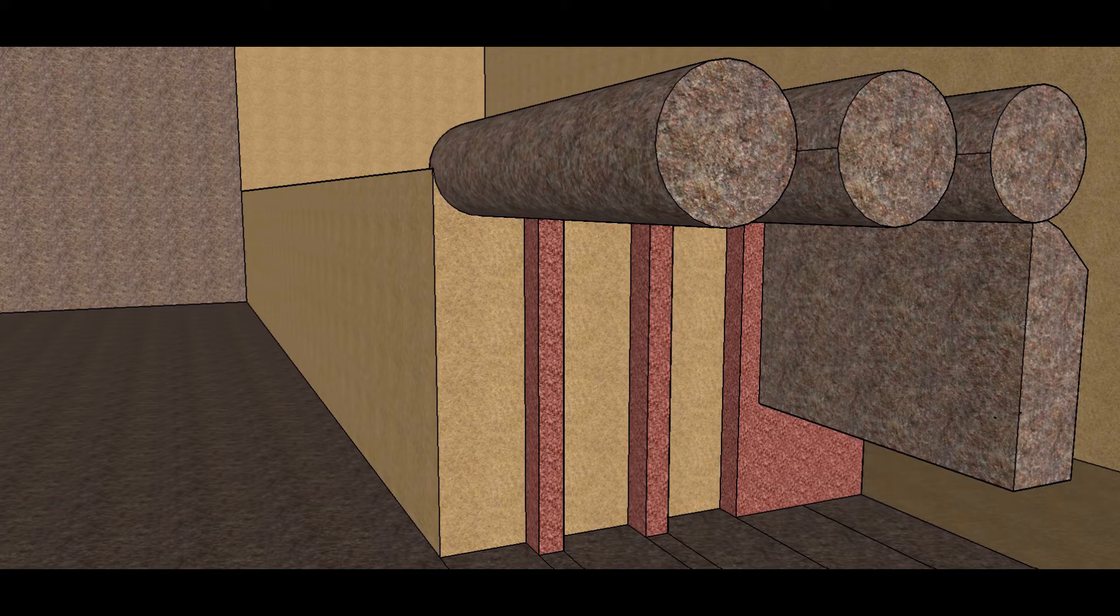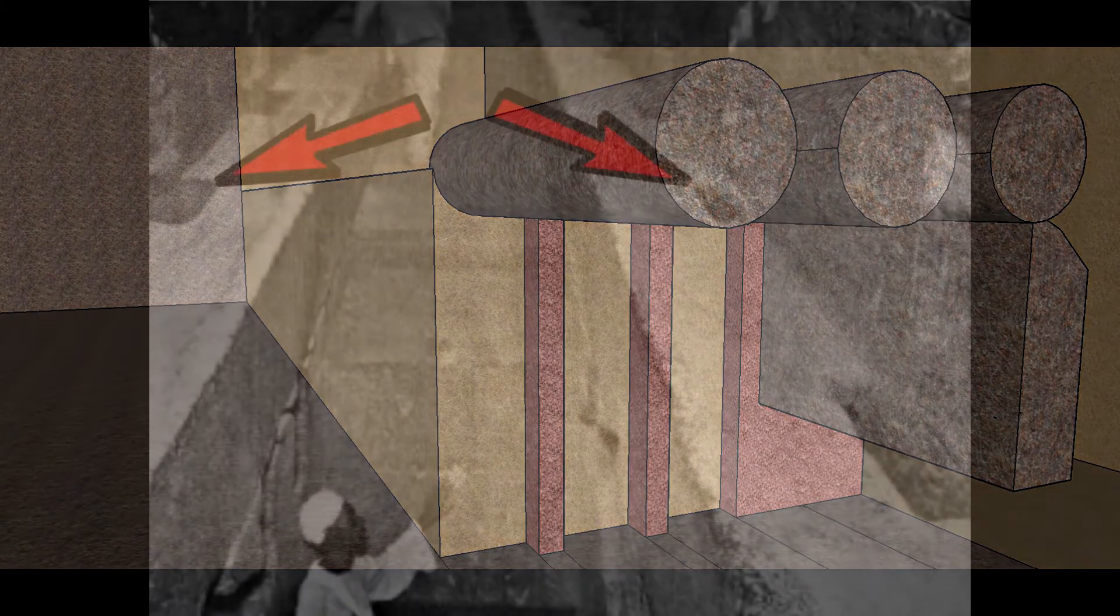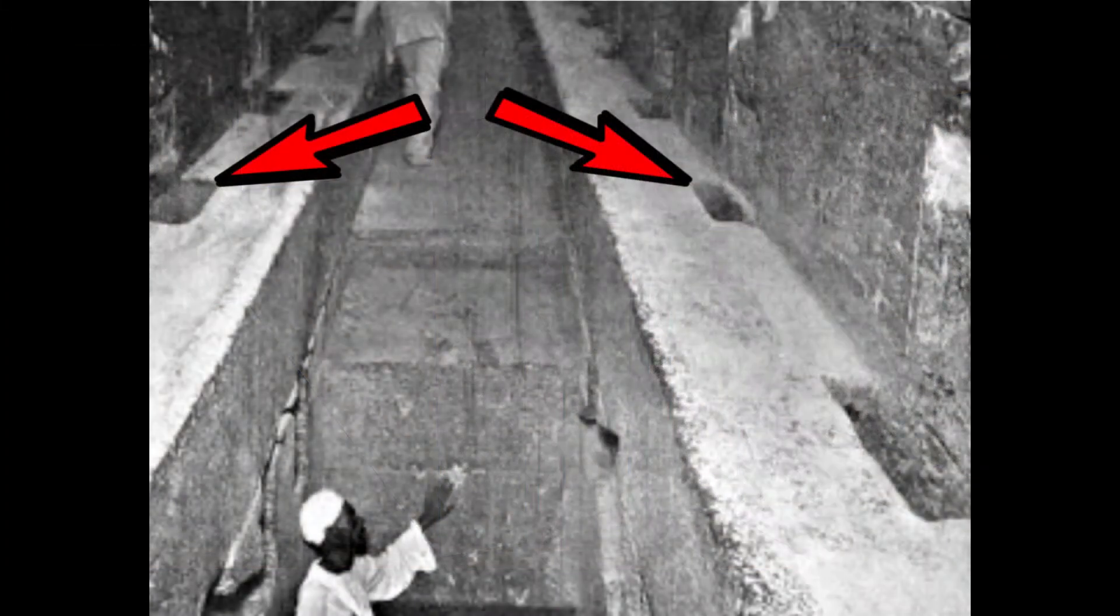Here you have notched out holes all along the Grand Gallery in equal measurements of each other. So when you combine all things together, the Antechamber and Grand Gallery can be used as a counterweight tugger system to aid the ancient builders to haul up the heavy stones.